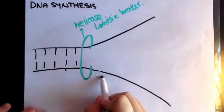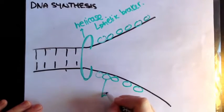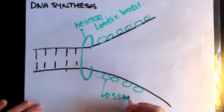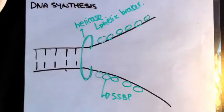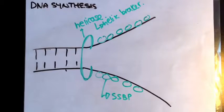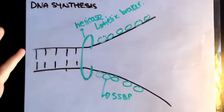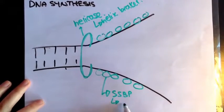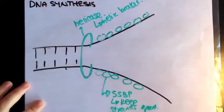Then we have these little structures on the individual strands that have been opened up, and what these are called are single-stranded binding proteins, or SSBP for short. What single-stranded binding proteins do is they protect the DNA from cleavage, prevent it from re-healing, and protect it from degradation — stabilizing the opened-up helix. So while the helicase is opening up the helix, the SSBPs are keeping the strands apart.